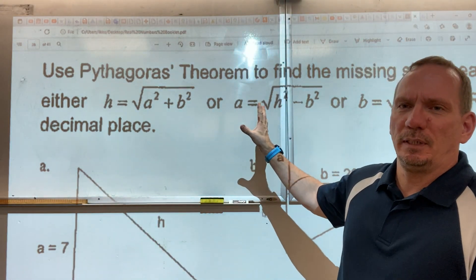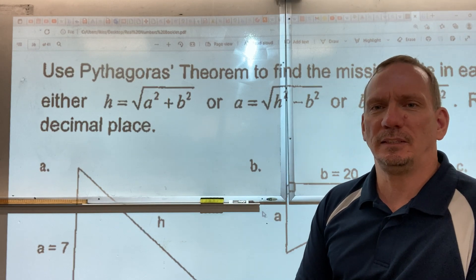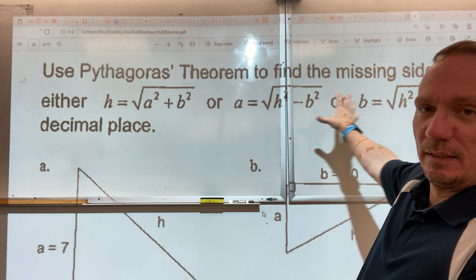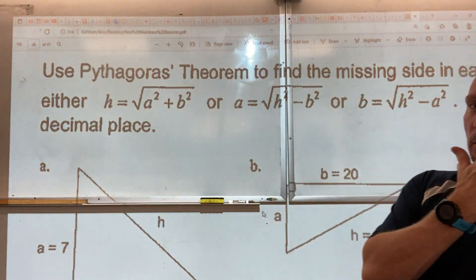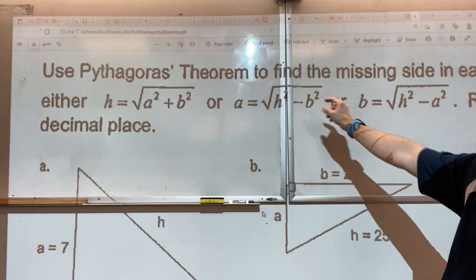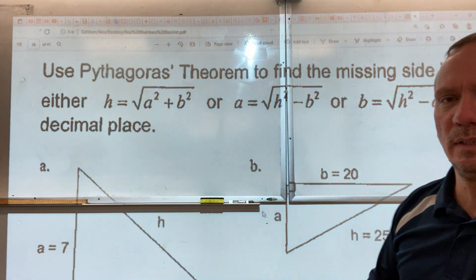In this video, I'm going to be working with the Pythagorean theorem, typically written as A squared plus B squared equals C squared, or written in these versions with square root symbols in them.